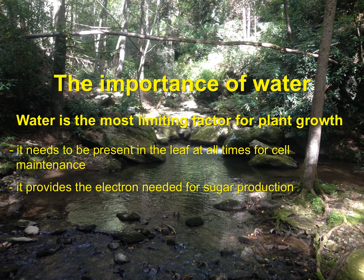The importance of water to the growth and survival of a tree cannot be understated. Of all the environmental resources, water is typically the most limiting factor for plant growth. The availability of water is a function of several environmental factors, including climate and the precipitation that results from that climate, soil type, soil texture, topography, and aspect — the position of the forest land on the landscape. Cells need to be surrounded by water to remain viable, and the electron provided by water molecules is required for photosynthesis to occur.